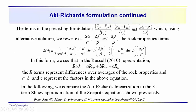In the Aki-Richards formulation, we simplify the notation from VP2 minus VP1 over the average value of P to delta alpha over alpha, delta beta over beta, delta rho over rho for these three terms, and we rewrite the expression as shown here now.